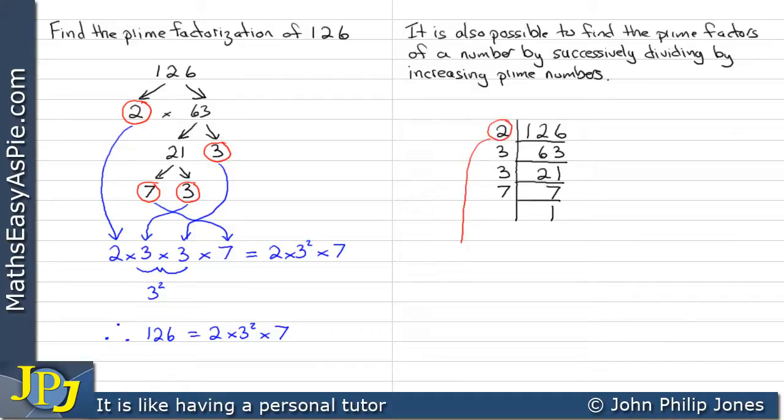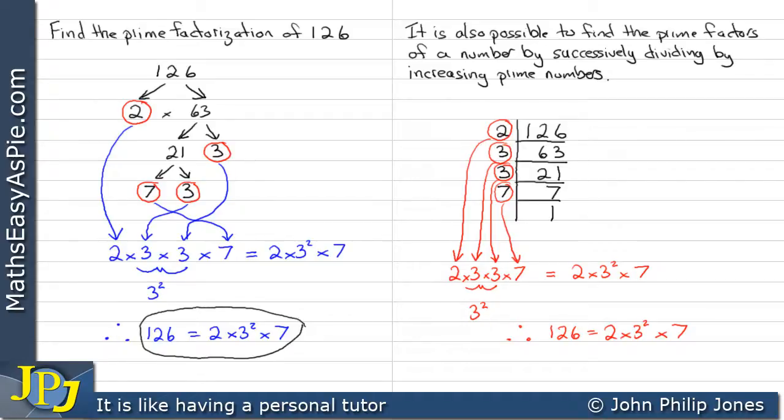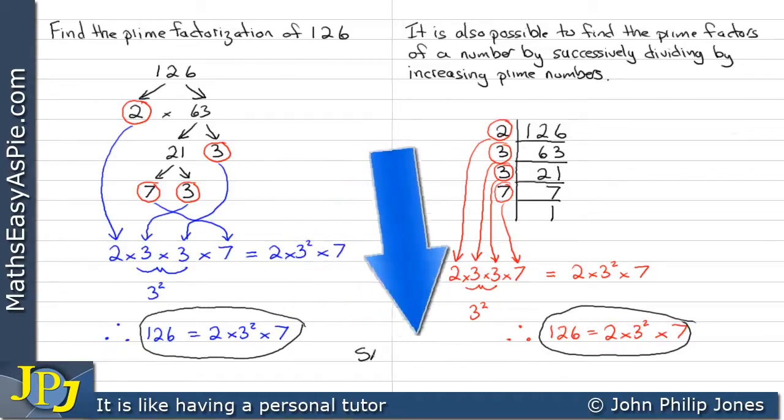What you then do, you take the 2 and you write this down. You then take the 3, writing that down, making sure you multiply them together. Then the next 3, multiplying that as well. And then you multiply by the 7. This is 3 to the 2, so we can rewrite this as 2 times 3 to the 2 times 7. Therefore, 126 equals 2 times 3 to the 2 times 7. And we can see that this and this, well, they're exactly the same.